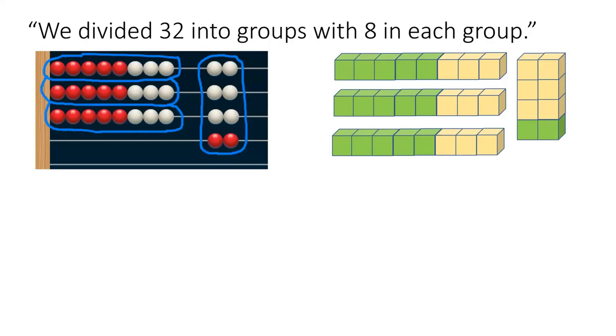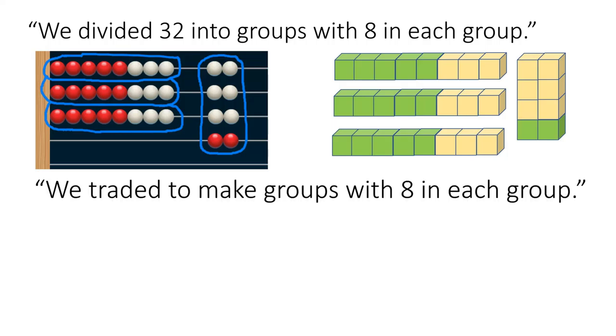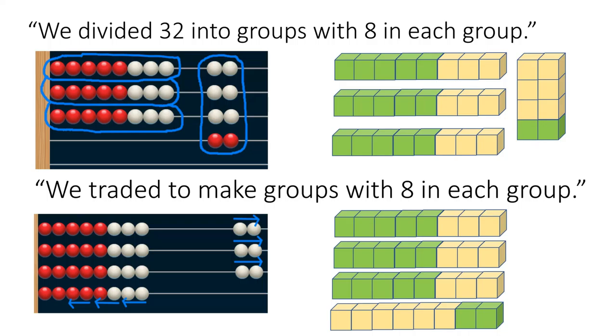Here we see students showing with both the Slavonic abacus and the unifix cubes that they divided 32 into groups with 8 in each group. These are examples of measurement division. Some students said, we traded to make groups with 8 in each group. They pushed 2 beads from each of the 3 complete 10 rows back to the right, and then traded those on the bottom row so that they wound up with 4 equal groups with 8 in each group. The students with the unifix cubes did something very similar. They took 2 off of each group of 10 and gave them to the bottom row until they had 4 equal rows of 8.